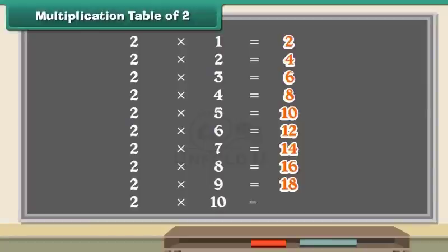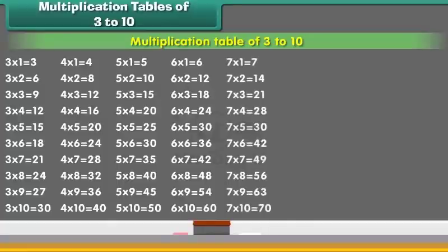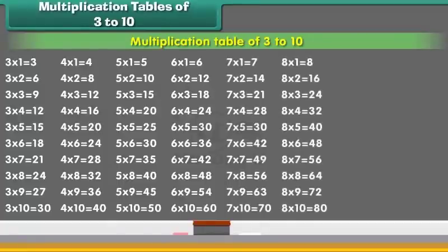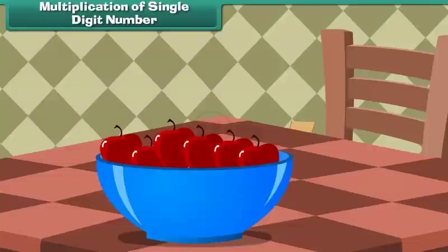2 tens are 20. Now let us learn the multiplication tables of the numbers 3 to 10. Let us start with the table of 3, then the table of 4, table of 5, and tables of 6, 7, 8, 9, and 10.